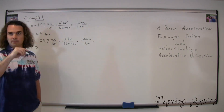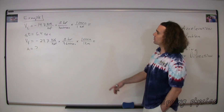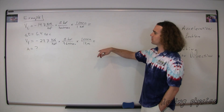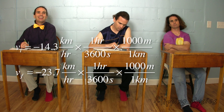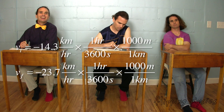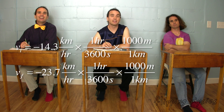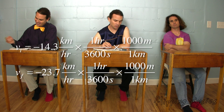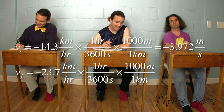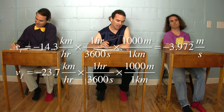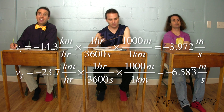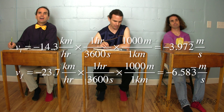And what do we get then for numbers for velocity initial and velocity final? The initial velocity is negative 3.9722 repeating, and the final velocity is negative 6.5833 repeating.